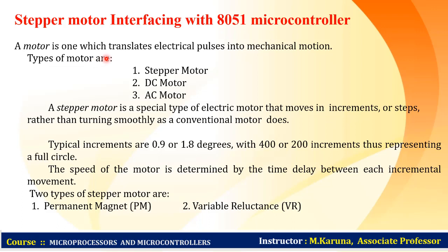A motor is one which translates electrical pulses into mechanical motion. There are different types of motors — stepper motor, DC motor, AC motor — but we are concentrating on stepper motor. A stepper motor is a special type of electric motor that moves in increments or steps rather than turning smoothly as a conventional DC motor does.